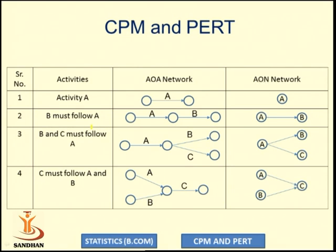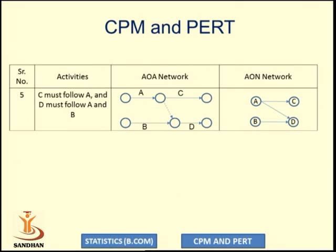In an AOA network diagram, C is the successor for A and B, or A and B are predecessors for C, but they are on the arrow. In an AOA network diagram, activities are represented on the arrow, while in an AON network diagram, the activities are denoted on a node.